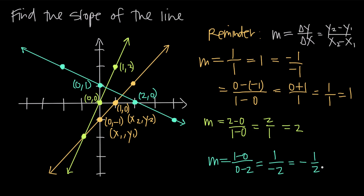This raises an important question: does it matter which point is x-sub-1, y-sub-1 and which is x-sub-2, y-sub-2? The answer is no, it doesn't matter as long as you keep it consistent. If you use one y-value as y-sub-2, then the corresponding x-value must be x-sub-2. You could do 1 minus 0 over 0 minus 2, or alternatively 0 minus 1 over 2 minus 0 — either way you get the same answer.